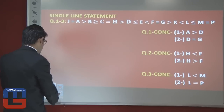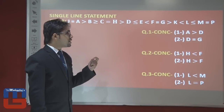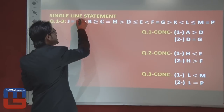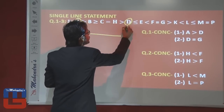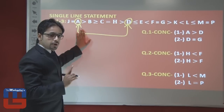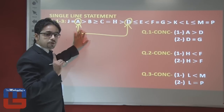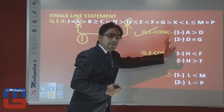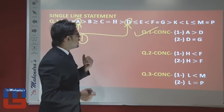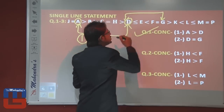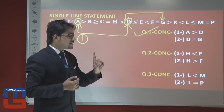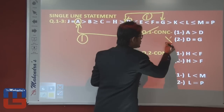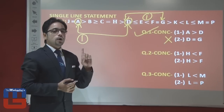Let's solve the first question. The first conclusion asks: is A greater than D? Find where A and D are — all symbols between A and D are moving left, so by priority, A > D is true. The second conclusion asks: is D equal to G? Between D and G, all symbols move right, so by priority D < G. But the conclusion says D = G, which is definitely false. So only conclusion one is true.